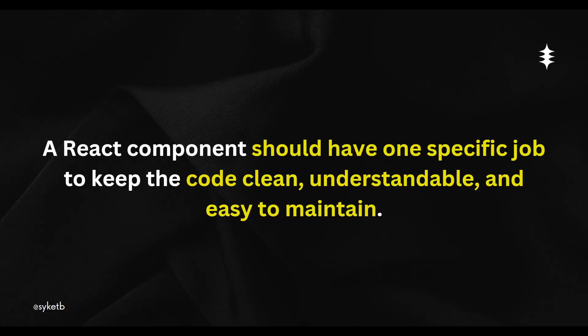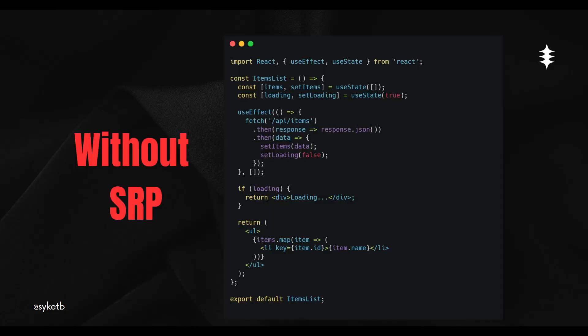Let's learn the Single Responsibility Principle with an example. In this ItemList component, if you closely observe, it handles three tasks: handling state, fetching data, and displaying content to the users. That means it's responsible for doing three tasks. But SRP says a React component should have only one task or responsibility. So this ItemList component violates the Single Responsibility Principle.